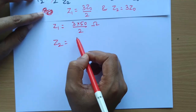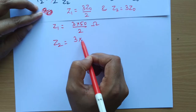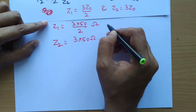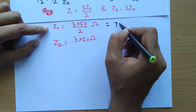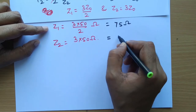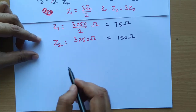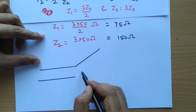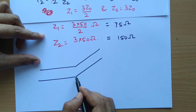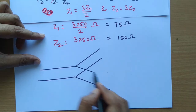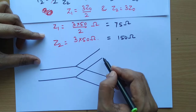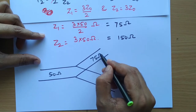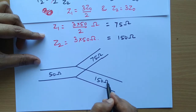From the second equation, similarly cancelling common terms, we get Z2 = 3Z0. With Z0 taken as 50 ohms, Z1 = 3×50/2 = 75 ohms and Z2 = 3×50 = 150 ohms. So if we make a power divider, it will have characteristic impedances of 50 ohms, 75 ohms, and 150 ohms.